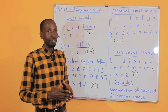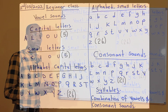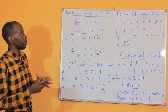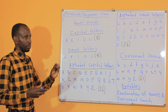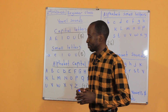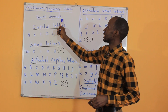Today we have beginner class and this lesson is for beginner class. We are talking about sounds. There are many sounds. We have got vowel sounds and alphabet sounds. Today we are talking about how to pronounce vowel sounds and how to pronounce consonant sounds. Let's go — we are starting with vowel sounds.